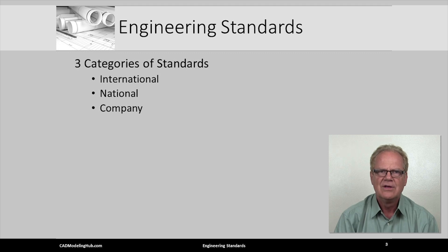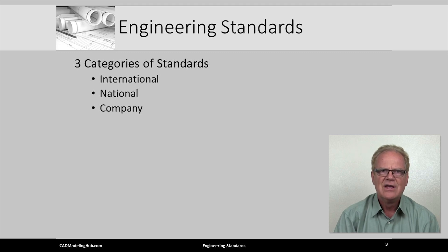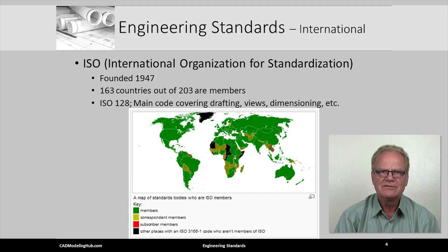Many of the Allied nations had struggled with their interchangeability of warfighter parts during World War II. Good parts from one damaged jeep, tank, cannon, or gun could not easily replace those same damaged parts on another jeep, tank, or cannon. Much of engineering and manufacturing prior to World War II was made to fit, which made interchangeability almost impossible.